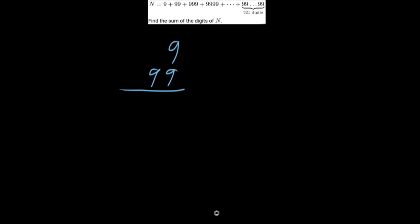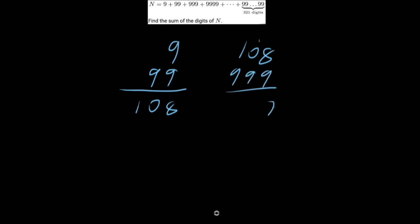We can start by trying to add this up directly. So 9 plus 99 gives us 108, and 108 plus 999 gives us 1107.